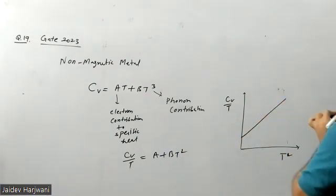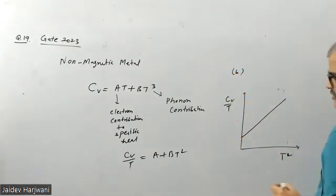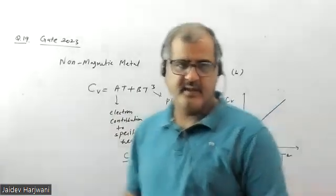Then it will be a straight line. So this is given as option B, so option B is the correct answer for this question. Thank you very much.